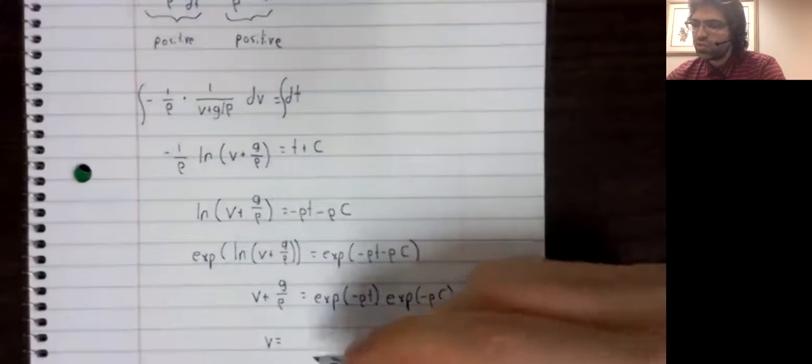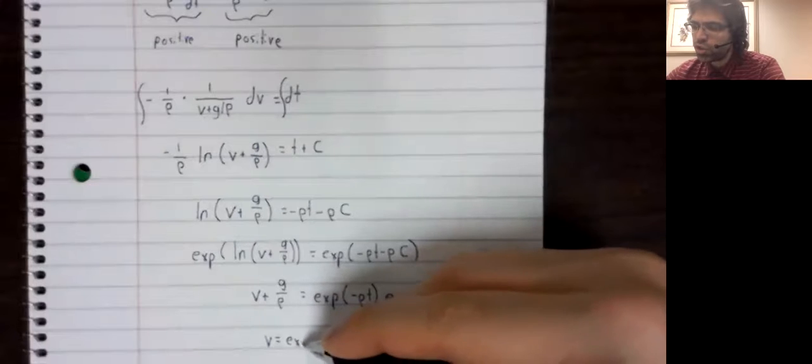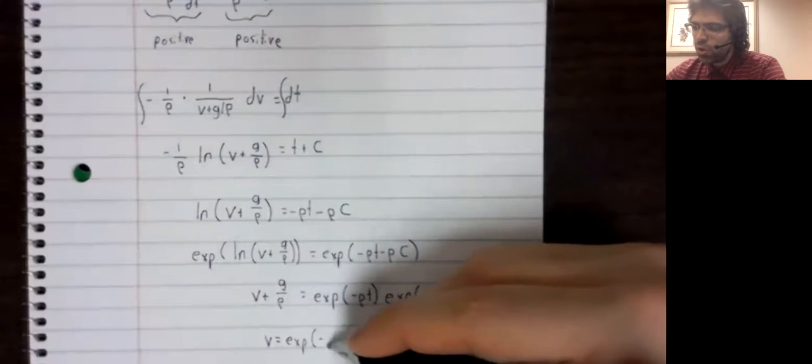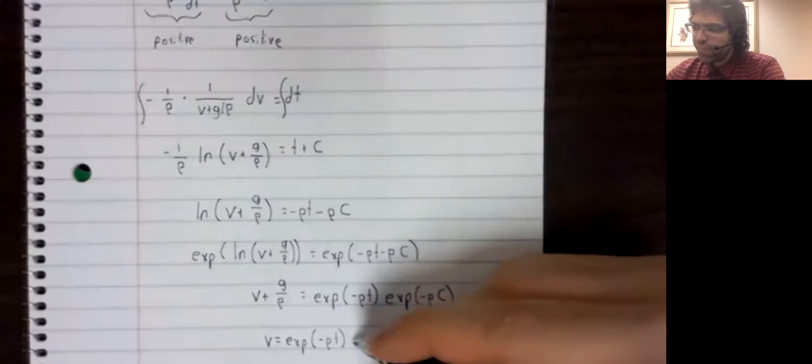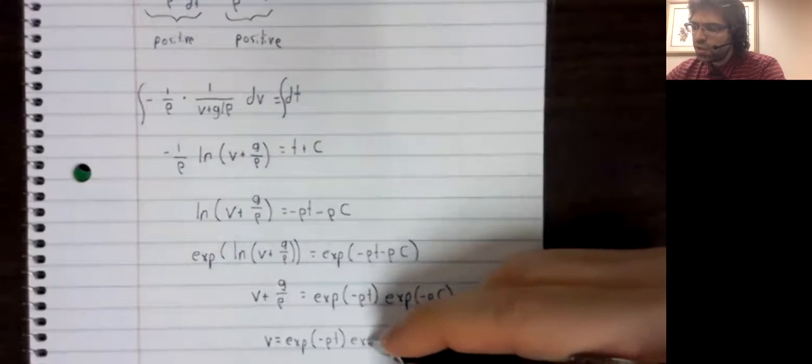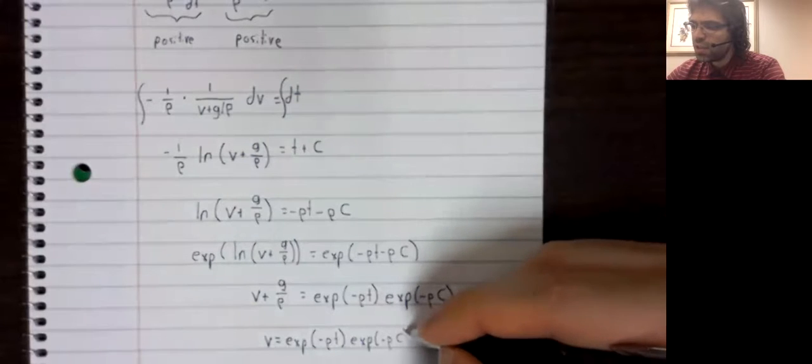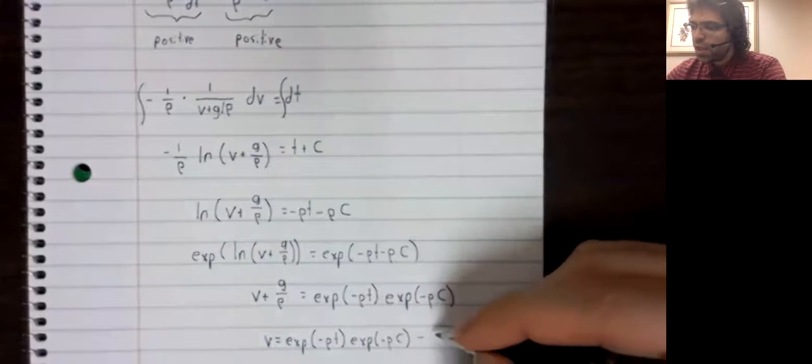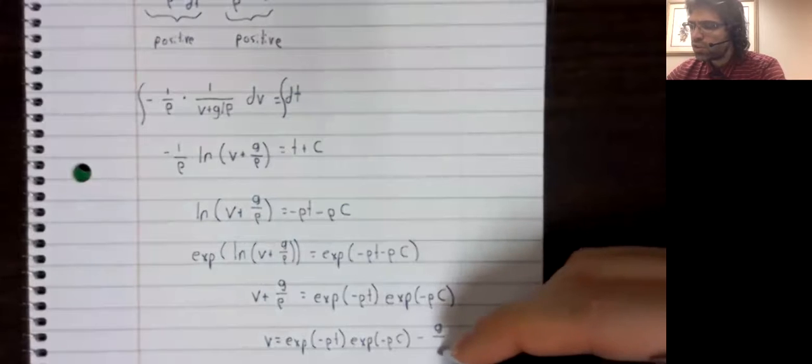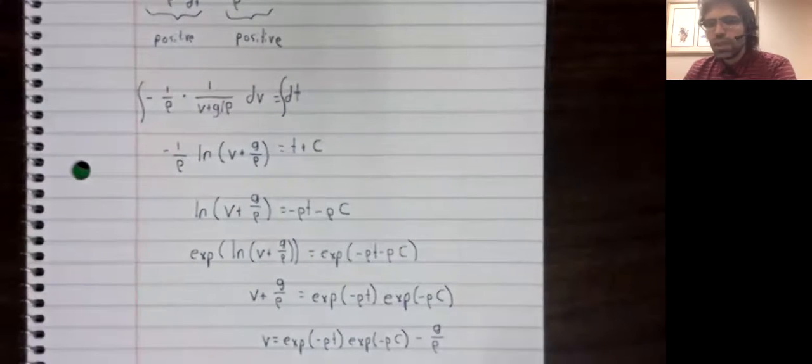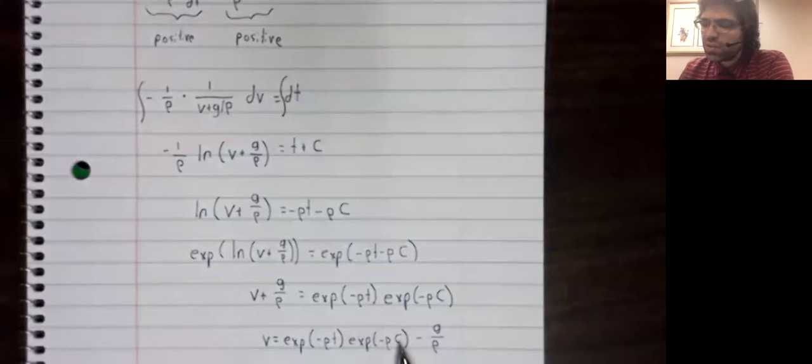On the right-hand side, if we have the exponential of addition or subtraction, as the case may be, we can split it up into two exponentials. And now, in a sense, we could call this problem finished. Our goal was to find the velocity function v, and we have accomplished that goal.